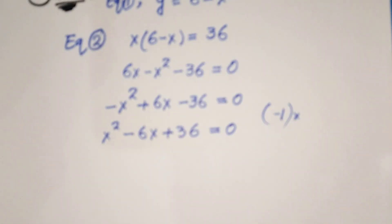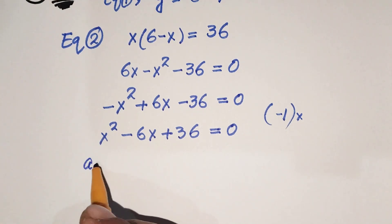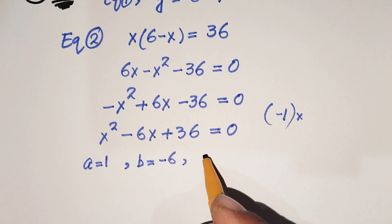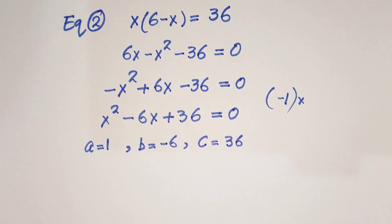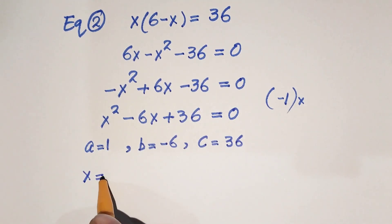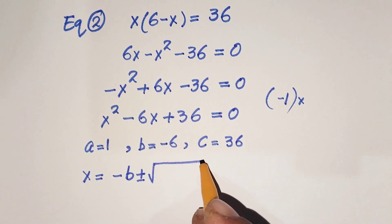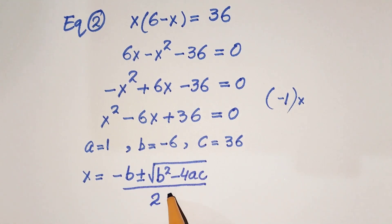We will use the quadratic formula to find the value of x. Here our value of a is 1, b is minus 6, and c is 36, which is a constant. The quadratic formula is x equals minus b plus or minus square root of b squared minus 4ac, all over 2a.